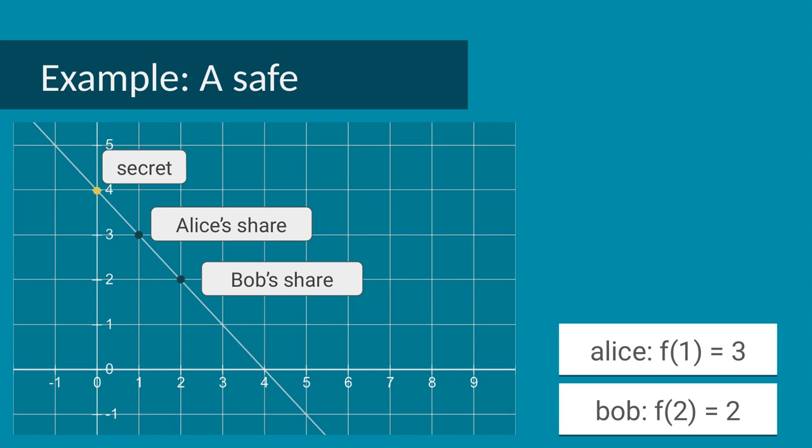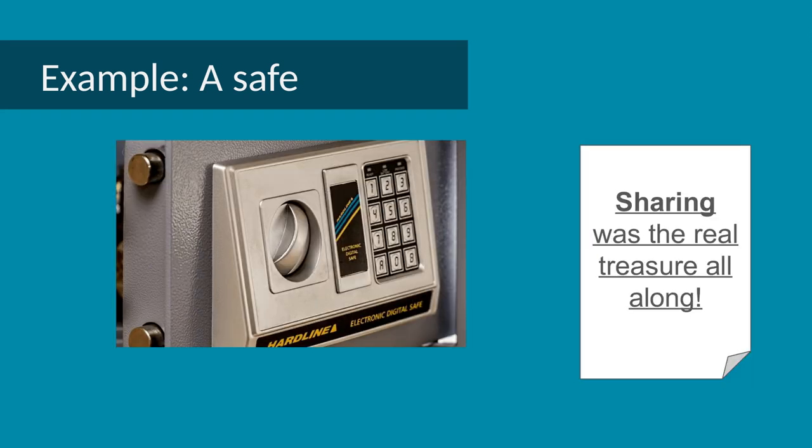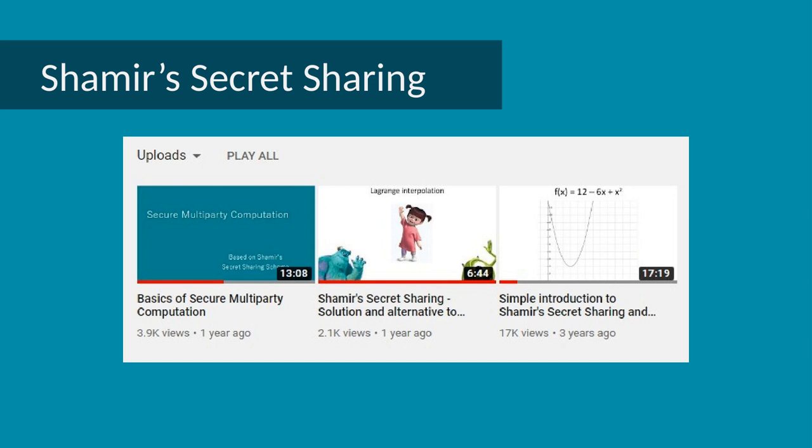Only when Alice and Bob combine their shares can they use basic high school math to reconstruct the line and find the code for the safe. They can then open it and find the treasure inside: a sheet of paper saying sharing was the real treasure all along. Watch my other videos to find out how this scheme extends to any number of shares while preserving perfect secrecy until the desired threshold are combined.